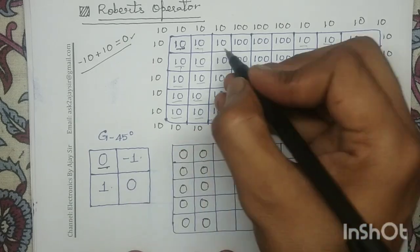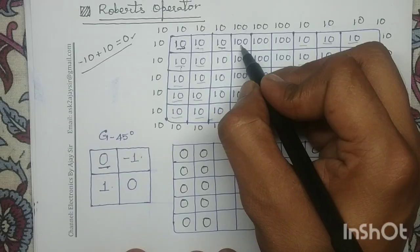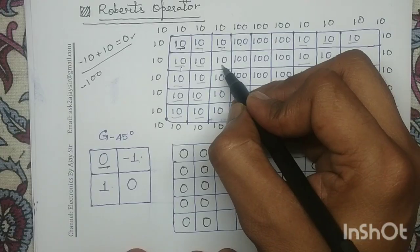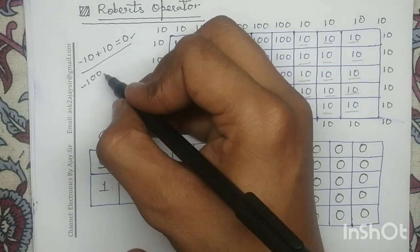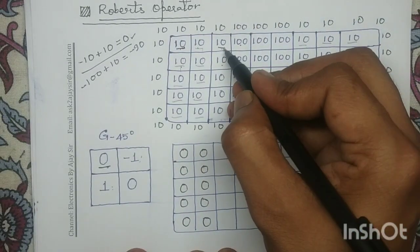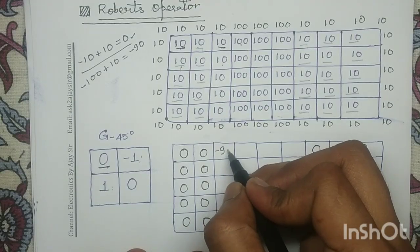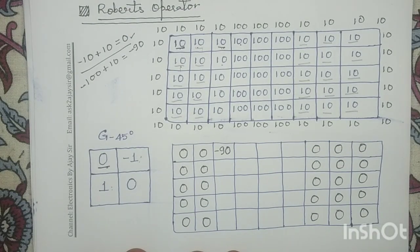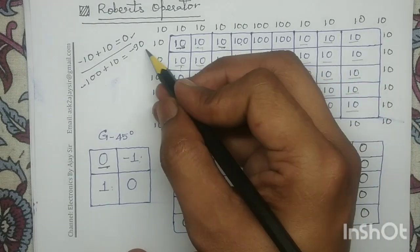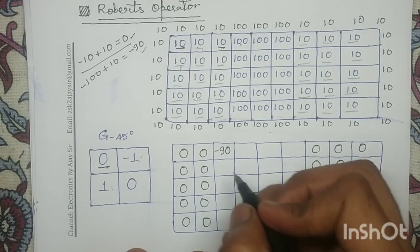Next, the center of this mask is placed here. This pixel value 100 is multiplied with coefficient minus 1, and this pixel value 10 is multiplied with coefficient 1. So the overall response is minus 90. For this particular pixel, the response is minus 90. In the similar way, for these four pixels, the response is also minus 90.